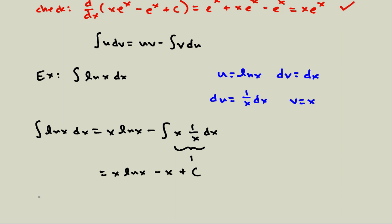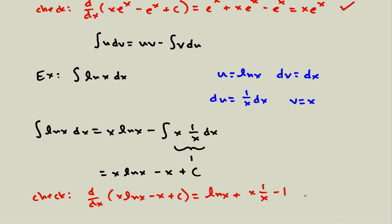We can check by taking the derivative of x ln(x) minus x plus c. For x ln(x), I use the product rule: derivative of x is 1, giving ln(x); plus x times the derivative of ln(x), which is x times 1/x. Then the derivative of negative x is negative 1. The x/x simplifies to 1 minus 1, which cancels to 0, leaving just ln(x) — which is indeed the integrand we started with. This also checks out.